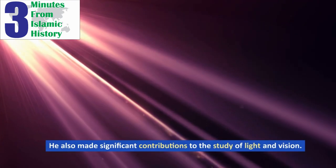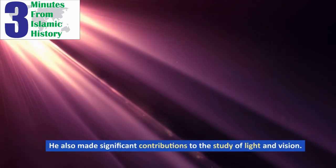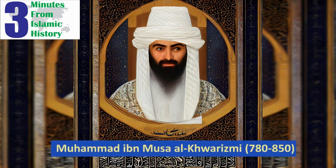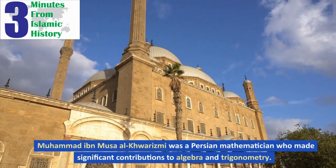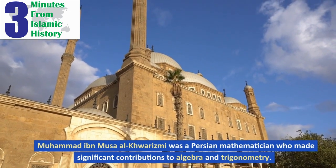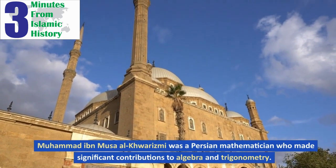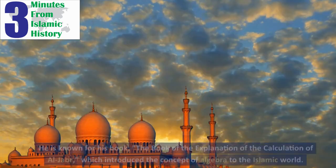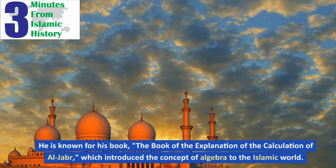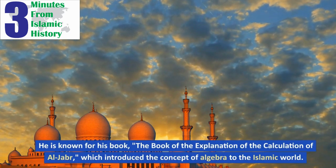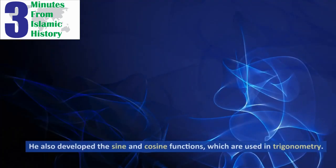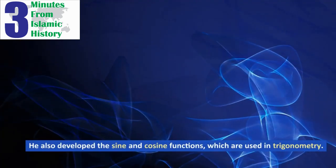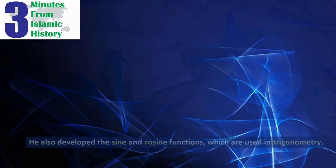Muhammad ibn Musa al-Khwarizmi, 780–850. Muhammad ibn Musa al-Khwarizmi was a Persian mathematician who made significant contributions to algebra and trigonometry. He is known for his book, The Book of the Explanation of the Calculation of Al-Jabr, which introduced the concept of algebra to the Islamic world. He also developed the sine and cosine functions, which are used in trigonometry.